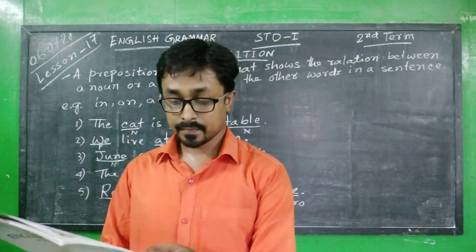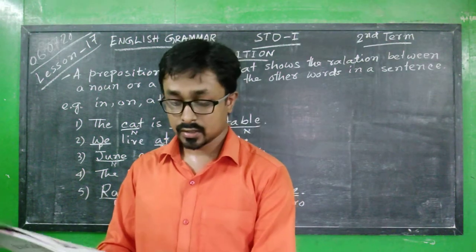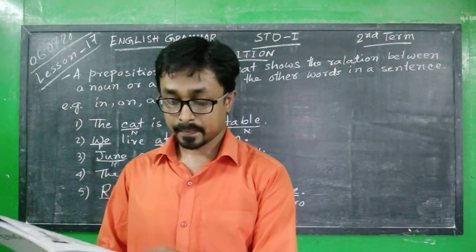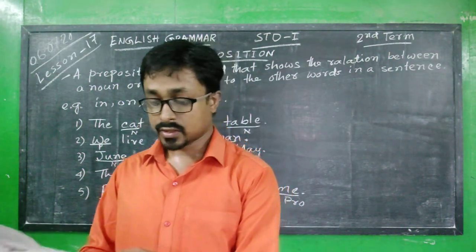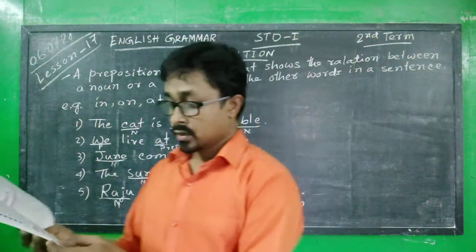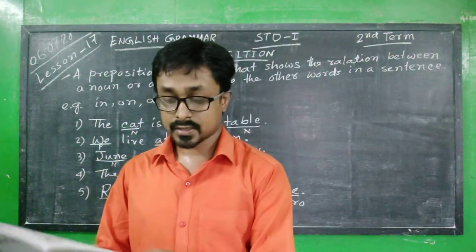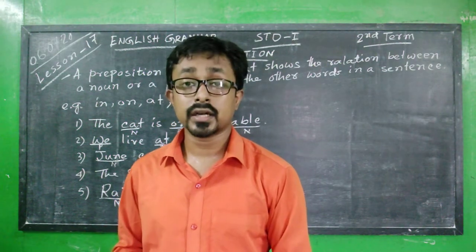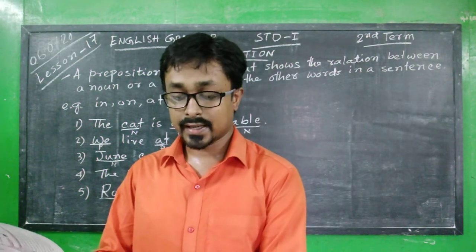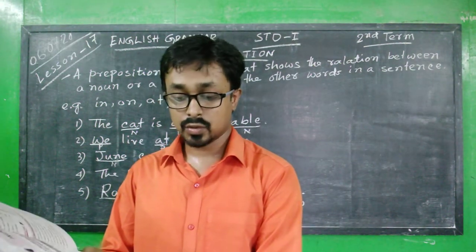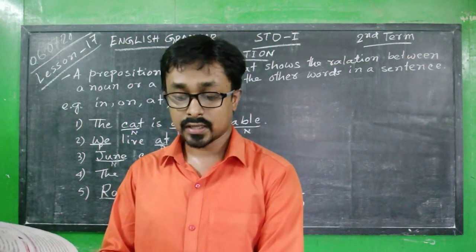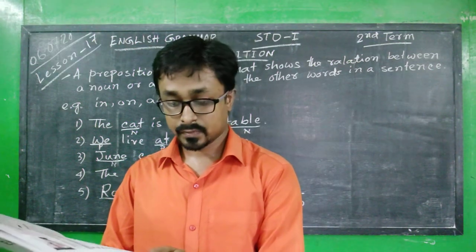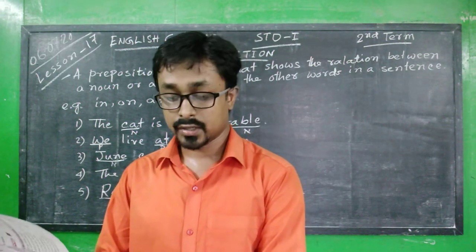'We live in Kolkata.' 'The birds are flying over the tree' — 'over' is the preposition. 'The cat is on the table.' 'The clouds are above us' — 'above' is the preposition. 'Rekha is standing near the wall' — here 'Rekha' and 'wall' are the two nouns, and 'near' establishes the relation.